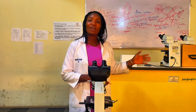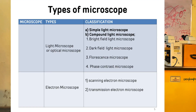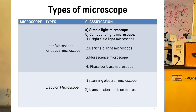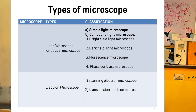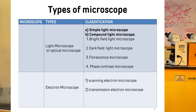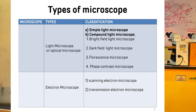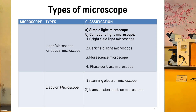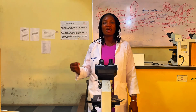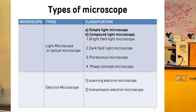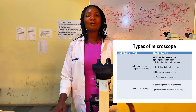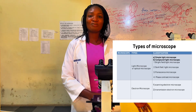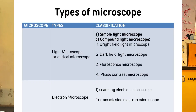There are basically two types of microscope: the light microscope and the electron microscope. The light microscope is further classified into the simple light microscope and the compound light microscope. The compound light microscope is further divided into the bright-field light microscope, the dark-field light microscope, the fluorescent light microscope, and the phase contrast microscope. The electron microscope is further divided into the transmission electron microscope and the scanning electron microscope.